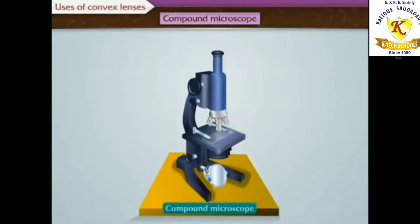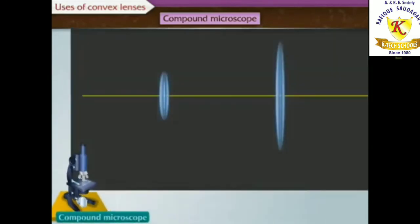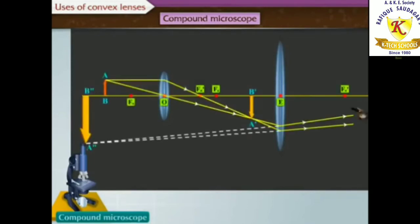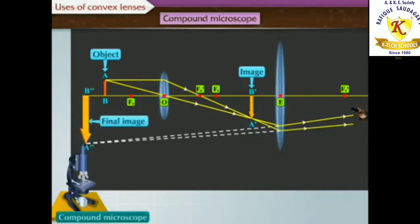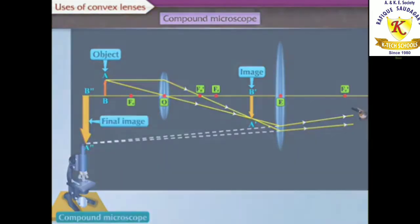The lenses are fitted inside a metallic tube in such a way that the distance between them can be changed. The axes of both the lenses are along the same line. As shown in the figure, the magnification occurs in two stages. The image formed by the first lens acts as an object for the second lens. Higher magnification can be obtained by the combined effect of two lenses.